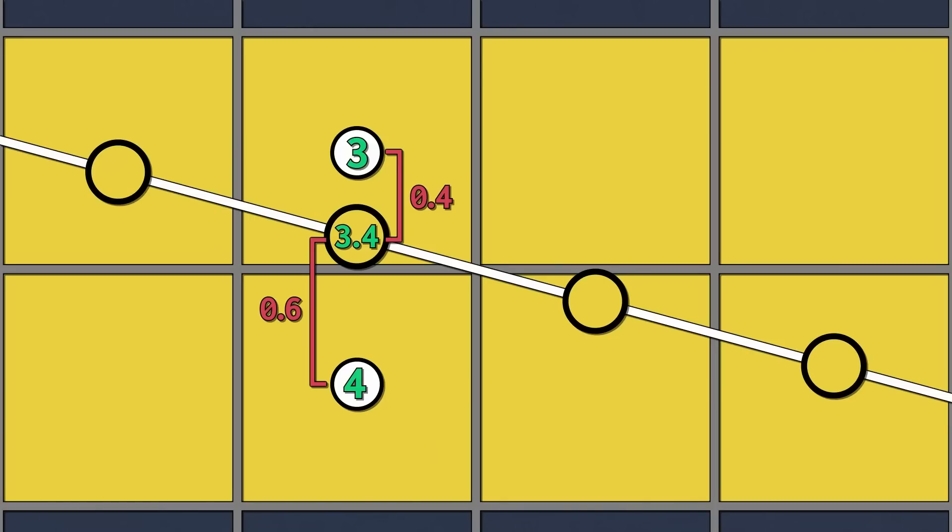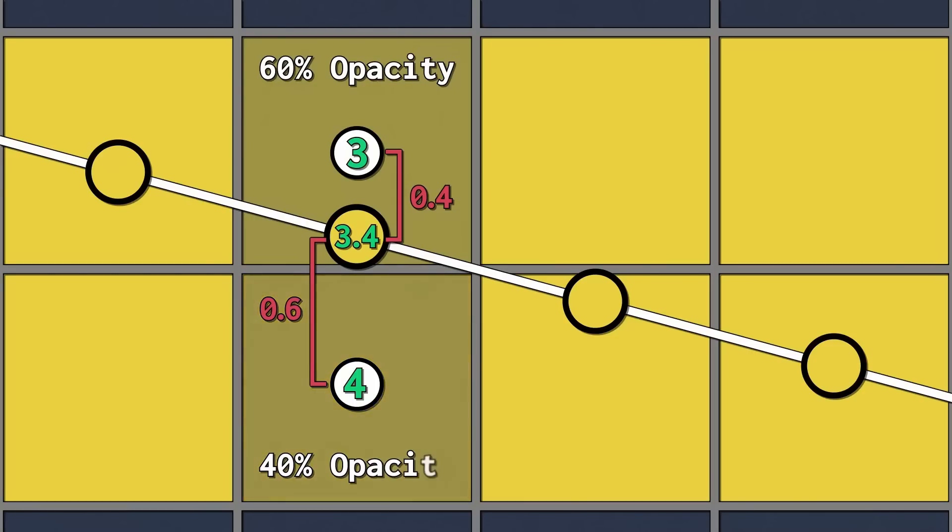As mentioned earlier, for our opacity, these distances are inverted. This means the top pixel has an opacity of 0.6, or 60%, and the bottom pixel has an opacity of 0.4, or 40%. Let's update our code accordingly.